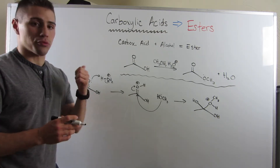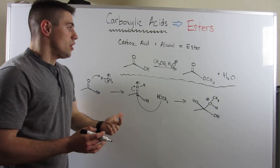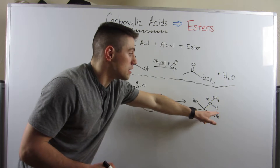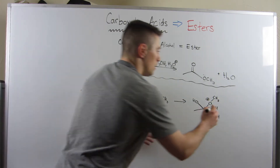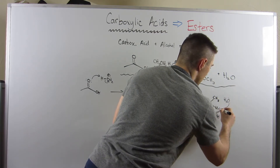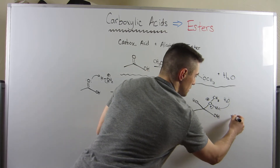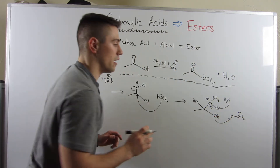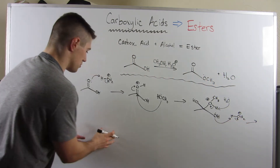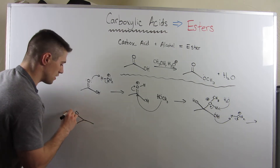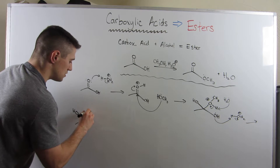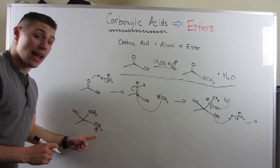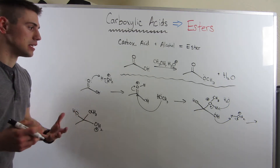Remember: we protonate the things we want to leave, and we deprotonate the things we want to stay. We want to get rid of this OH and replace it with OCH3. So let's protonate the OH and deprotonate the OCH3. Water grabs a proton and donates it to the OH group — that's the plus H+/minus H+ step. Now we have OCH3 on top and the OH has become a water molecule with a positive charge.